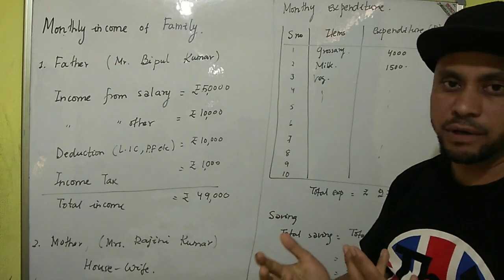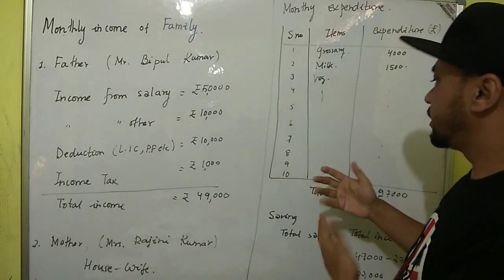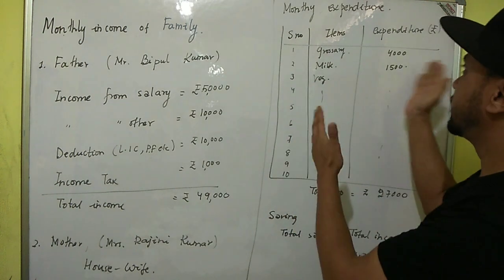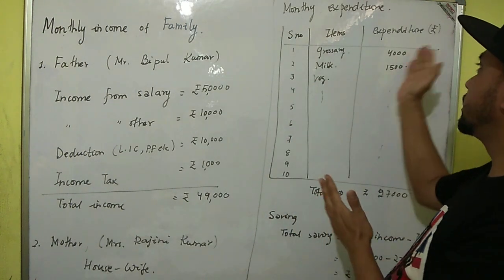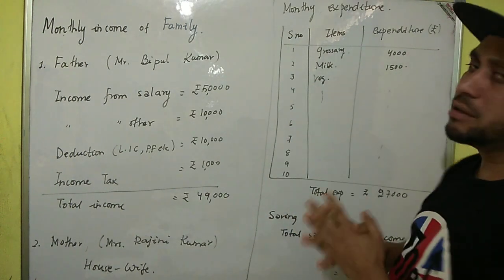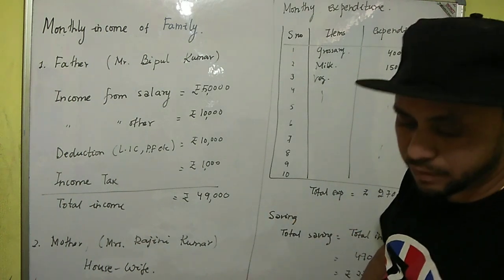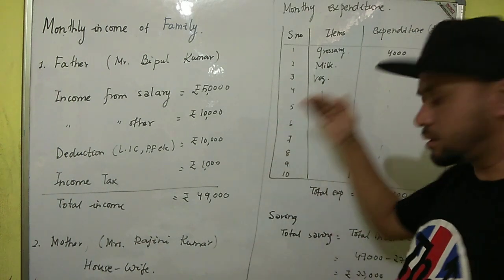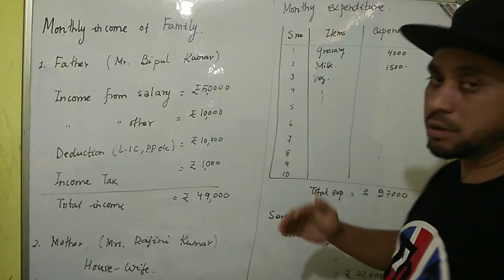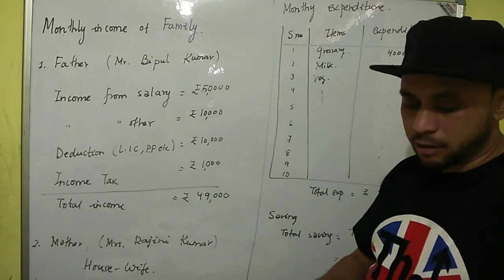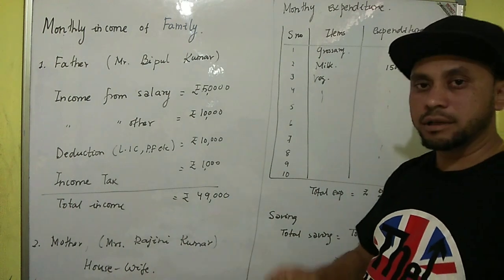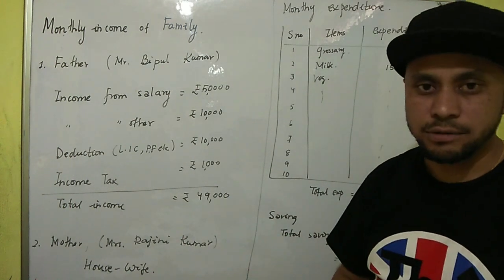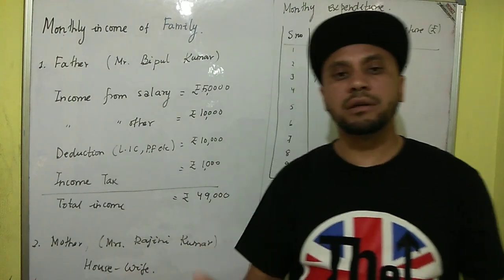Continuing the expenditure list: Household Items — two thousand; Tuition Fees — one thousand; Petrol — two thousand; Medicine — one thousand. The total expenditure comes to twenty-seven thousand rupees. This is just a sample — in your house the amounts may be different, so write your actual expenditures and calculate accordingly.